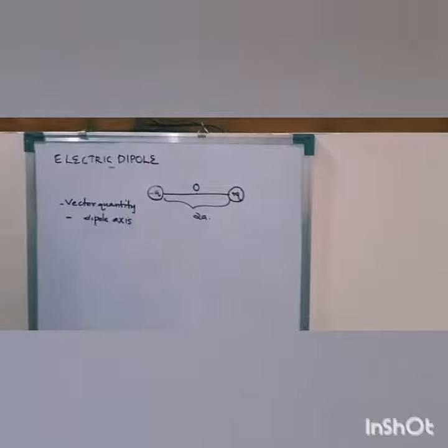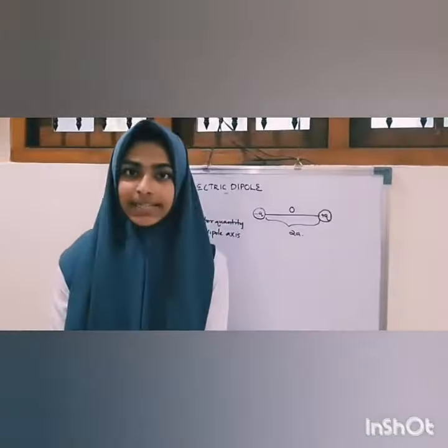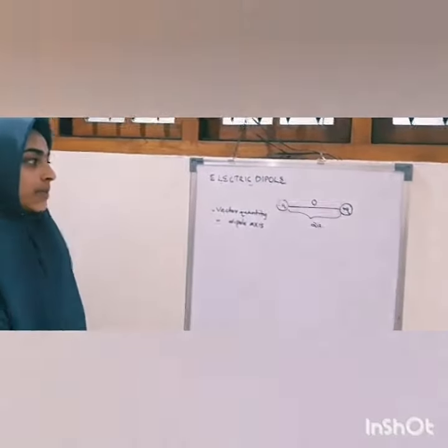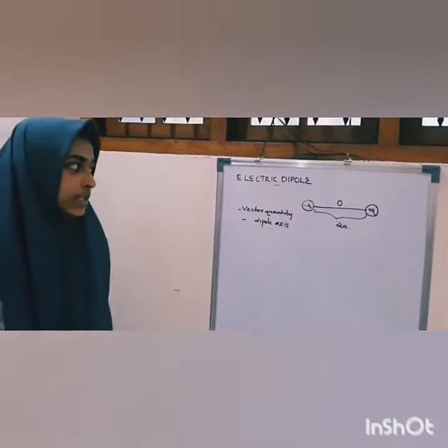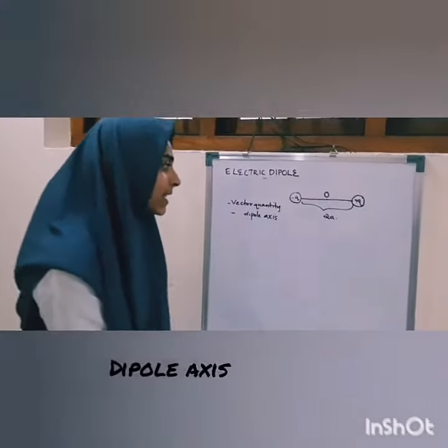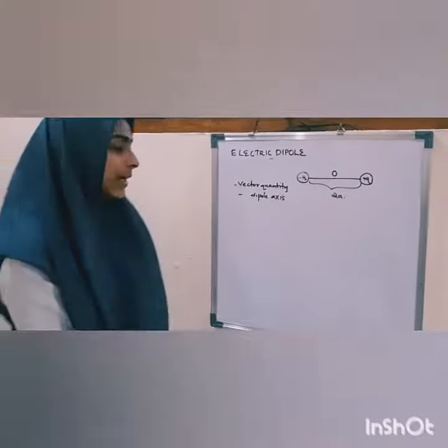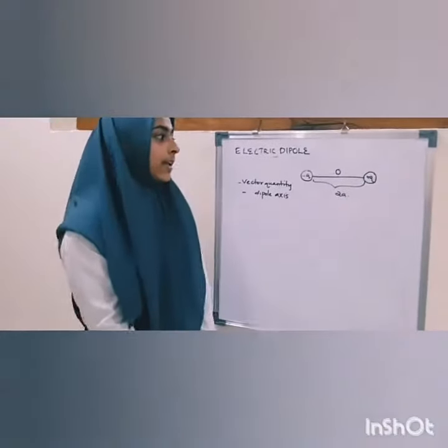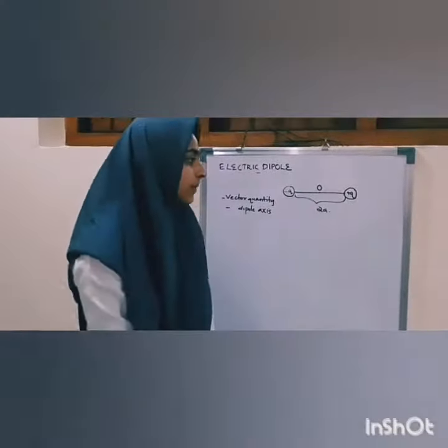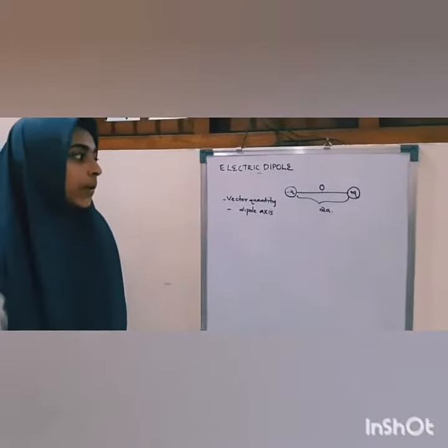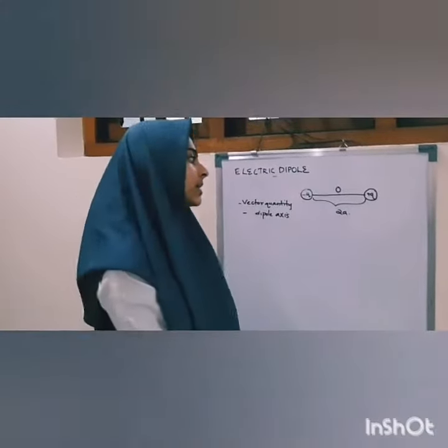Electric Dipole is a vector quantity and its direction starts from negative to positive. The line joining the two charges is known as Dipole Axis and O is the midpoint or center of the Dipole Axis.